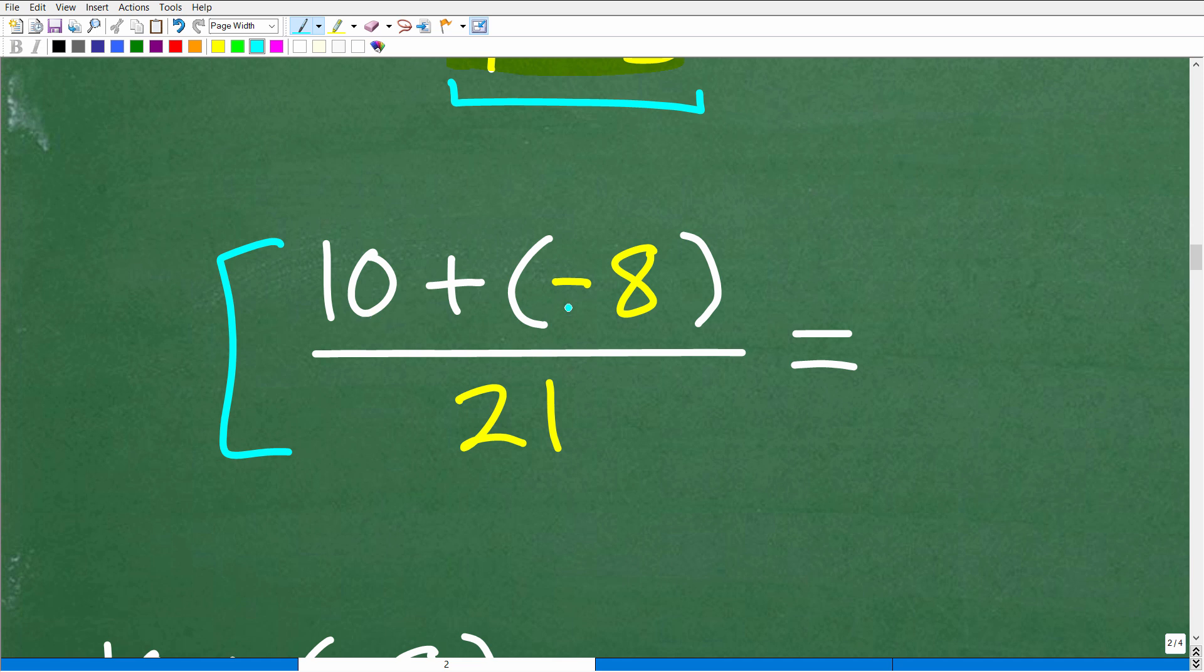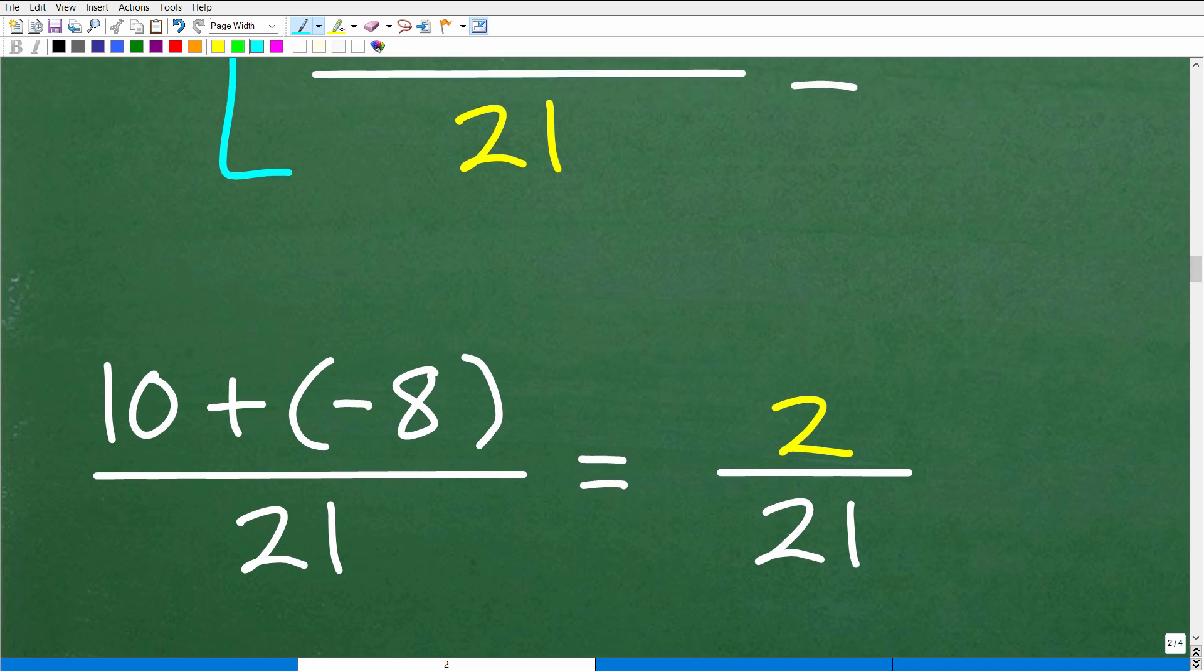So 10 plus negative eight is going to be what? Well, 10 plus negative eight, or you could think of this as 10 minus eight, is a positive two over 21. And this fraction is as simple as we can write it. And that is that, that is the solution.